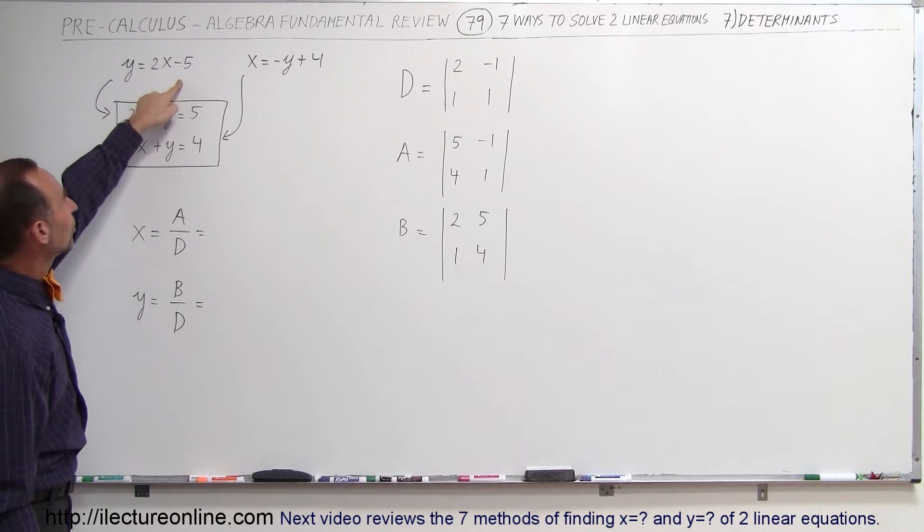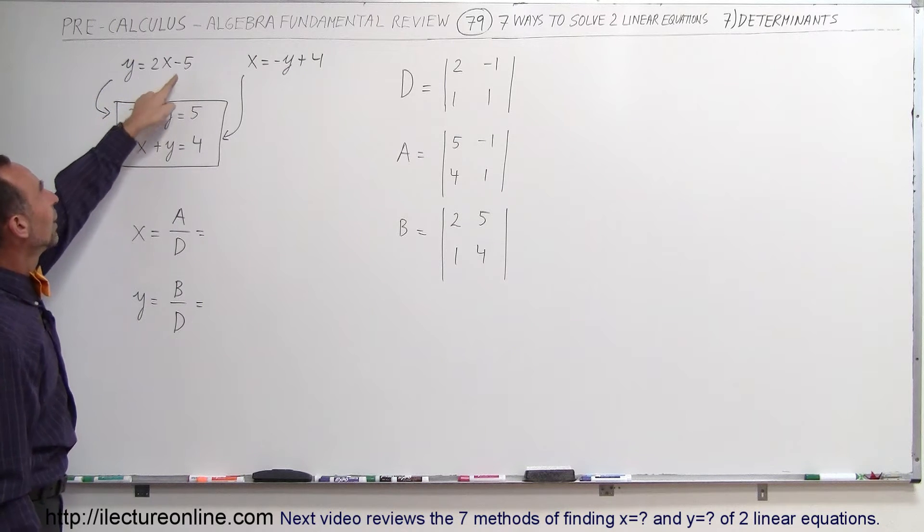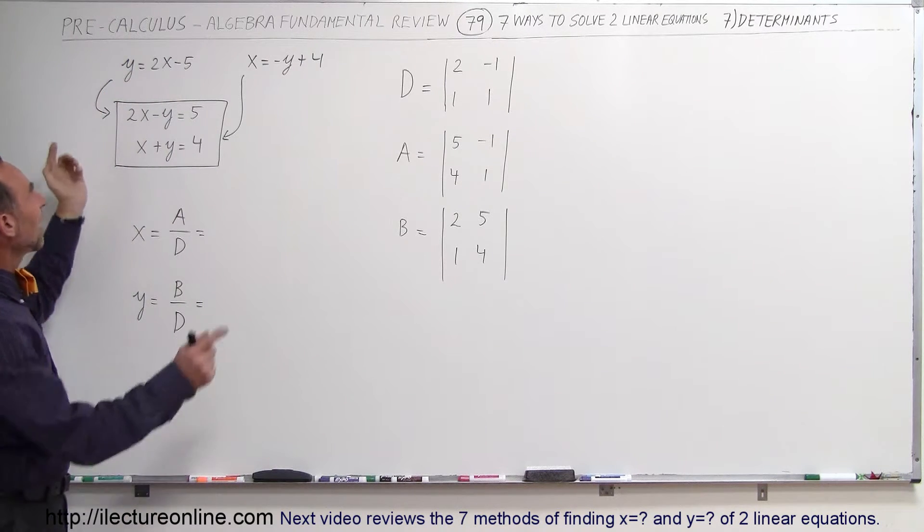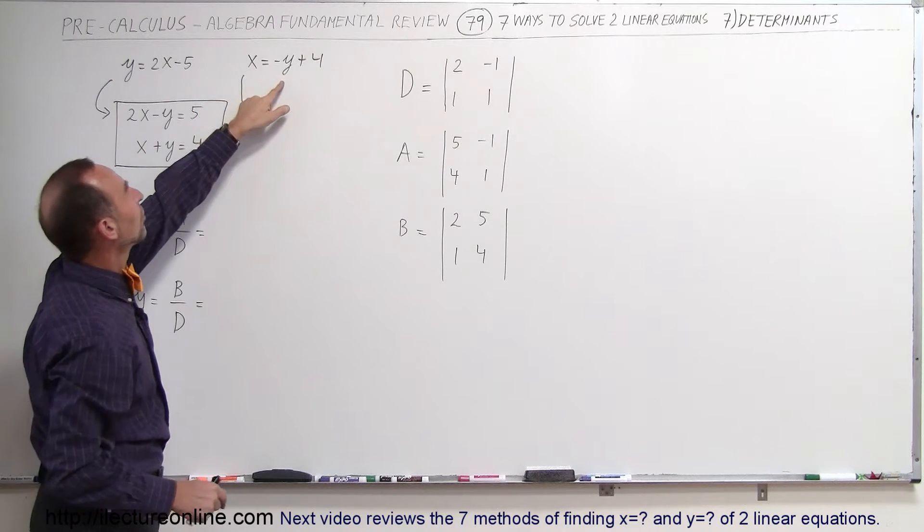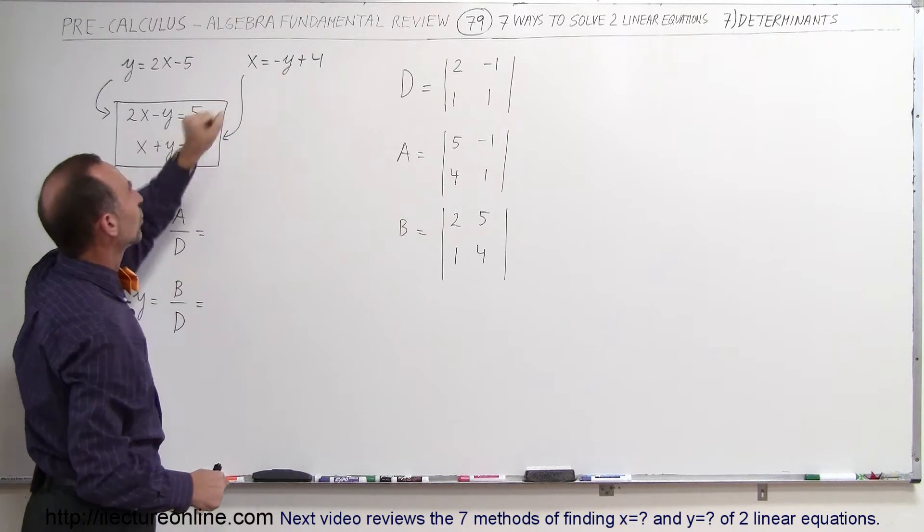Notice that when we bring the y across to the other side we get 2x minus y, the minus 5 to this side becomes plus 5 and then we switch the equation around. Here we simply put the minus y on the other side we get x plus y equals 4.